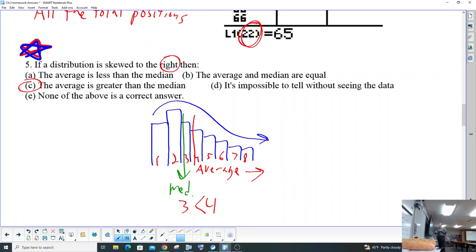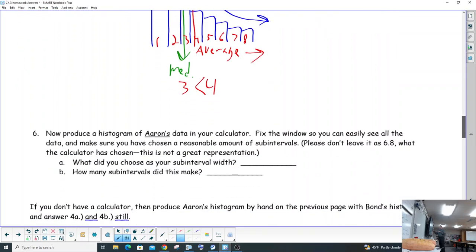If on the test I change it to the distribution skewed to the left, which I might, then it'll be switched the other way around, and the average will be less than median. Cool.